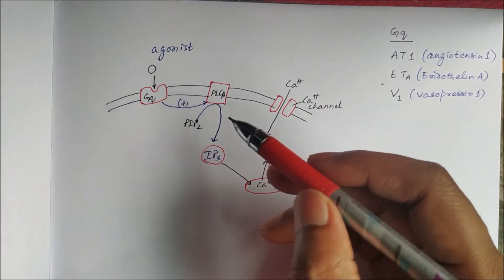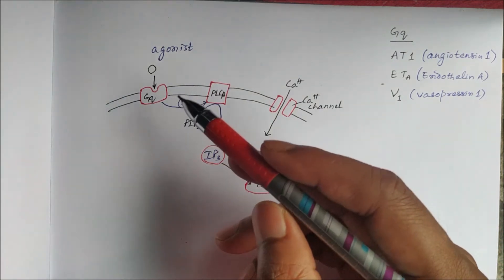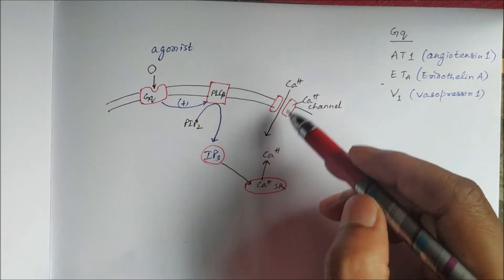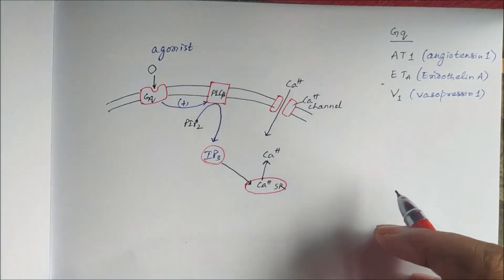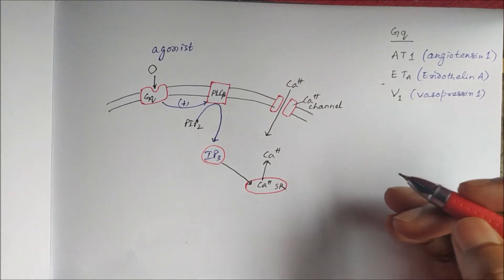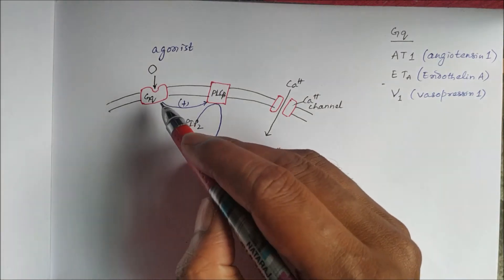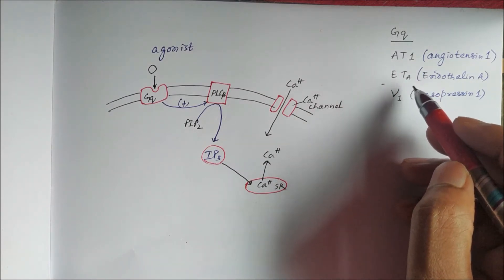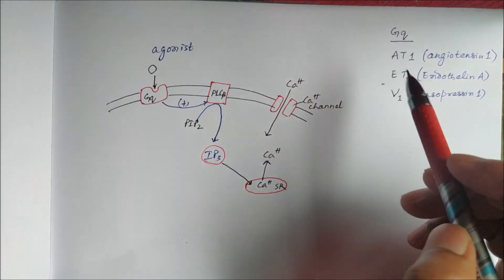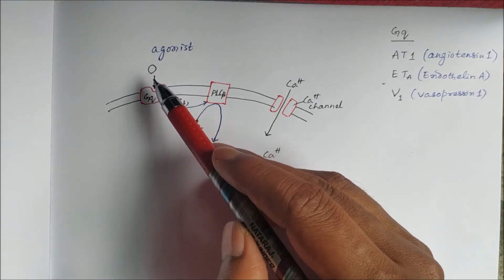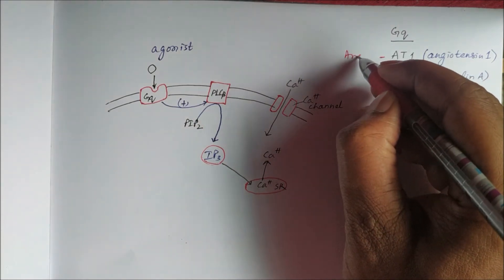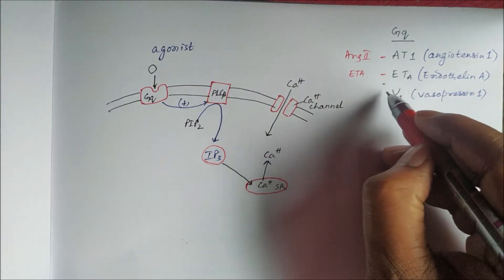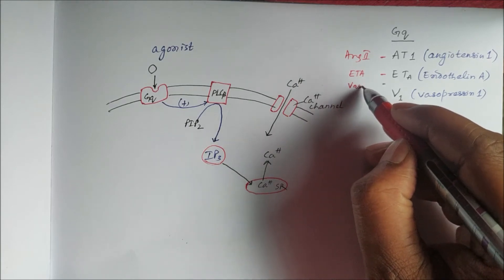IP3 acts on the calcium stores in the sarcoplasmic reticulum to release calcium. For details, you can refer to our G protein-coupled receptor video. Similarly, calcium channels on opening help influx of calcium into the cell. Examples of Gq-type receptors include AT1 receptor (angiotensin type 1), ETA receptor (endothelin A), and vasopressin 1 receptor, with agonists angiotensin 2, endothelin A, and vasopressin respectively.